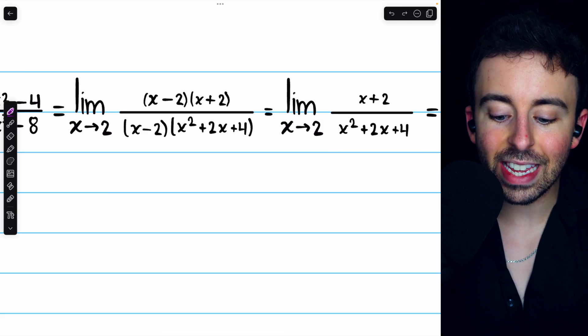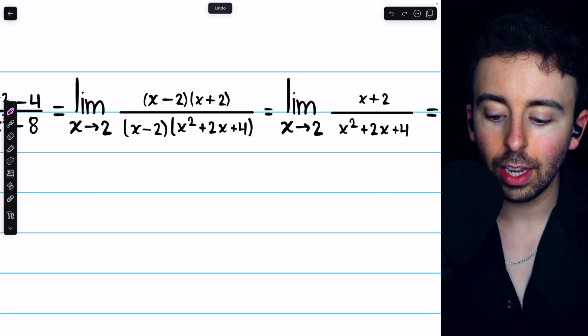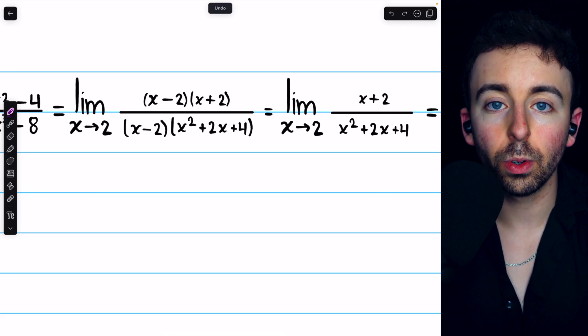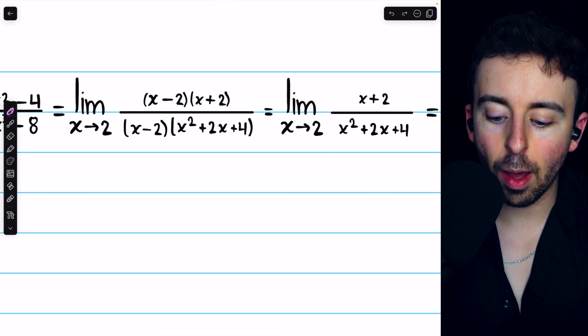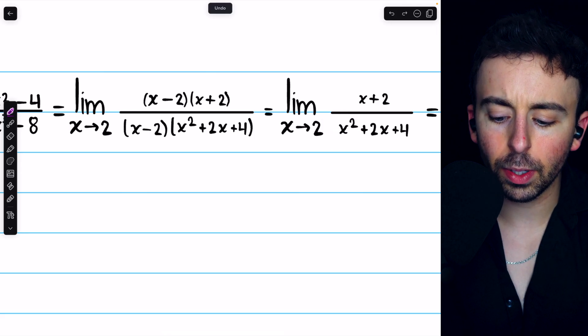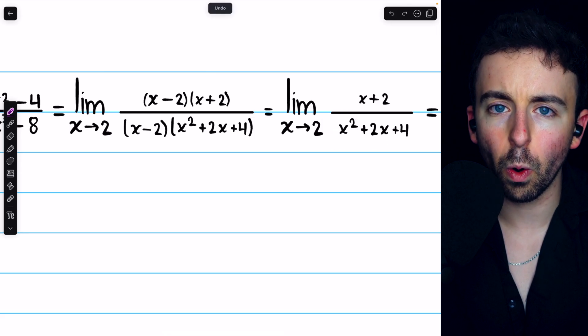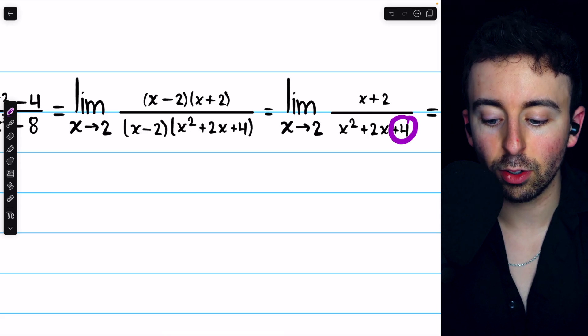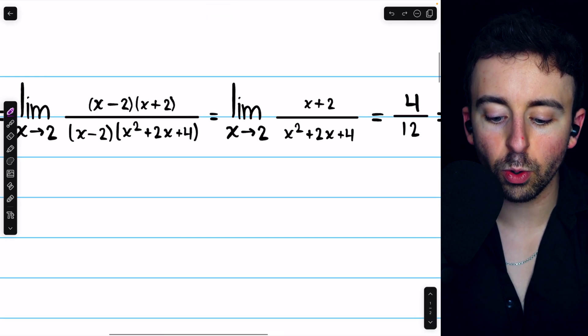And at this point, we can just plug in x equals 2. In the numerator, we have 2 plus 2, which is 4. And in the denominator, we have 2 squared plus 2 times 2. That's 4 plus 4 plus another 4, so that's 12. So it's 4 over 12.